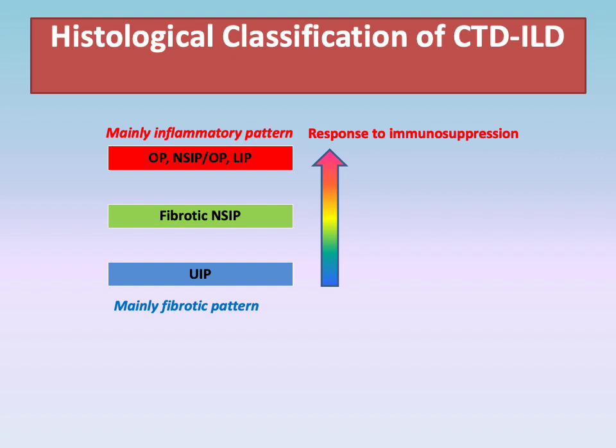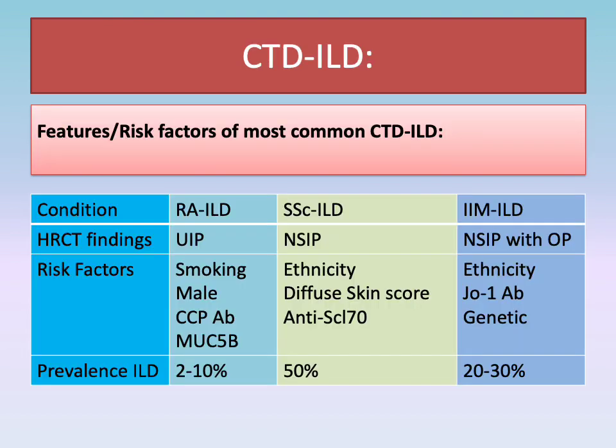Histologically and radiologically, CTD-ILD may present with more inflammatory pattern as in NSIP, organizing pneumonia, and LIP, to mainly fibrotic pattern as in UIP. The clinical response to immunosuppressive therapy is determined by the pattern, with a more favored response in the inflammatory group of ILD. NSIP pattern accounts for a large proportion of patients with systemic sclerosis and idiopathic inflammatory myopathy, while UIP pattern is more common in rheumatoid arthritis. Risk factors differ depending on the underlying CTD.